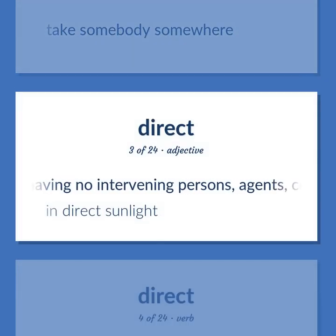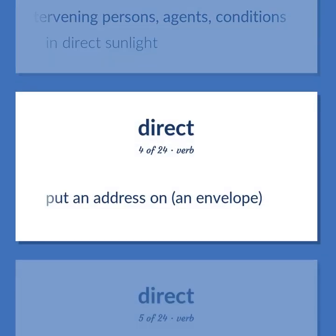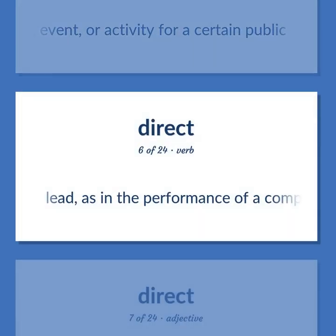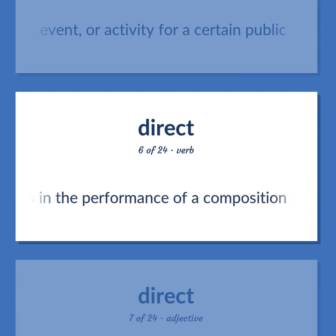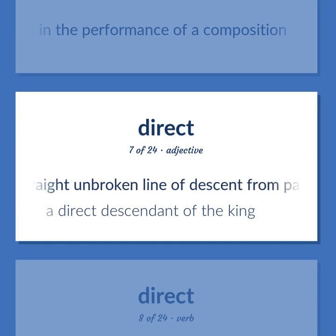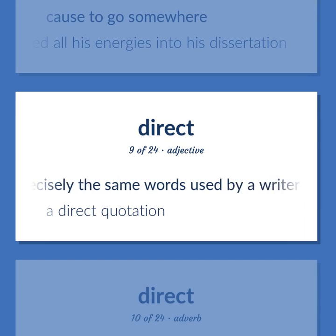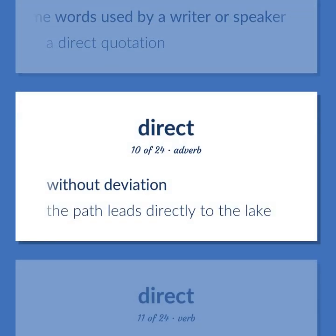Having no intervening persons, agents, conditions. In direct sunlight. Put an address on an envelope. Specifically design a product, event, or activity for a certain public. Lead, as in the performance of a composition. In a straight unbroken line of descent from parent to child. A direct descendant of the king. Cause to go somewhere. He directed all his energies into his dissertation. In precisely the same words used by a writer or speaker. A direct quotation. Without deviation.